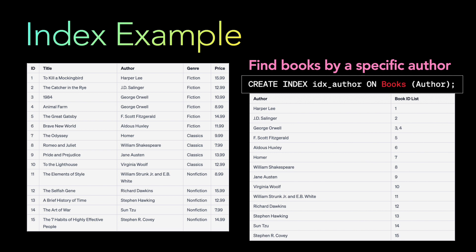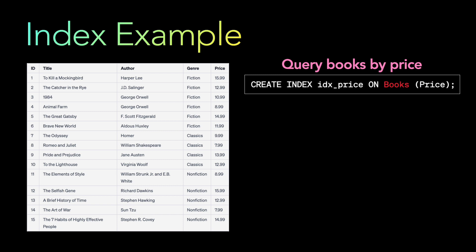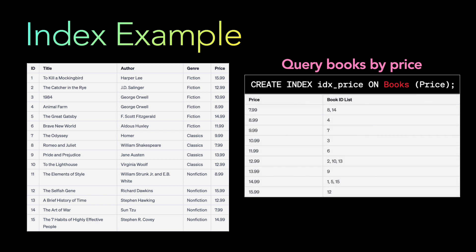Let's take another example with the same table — querying books by price. You create an index: CREATE INDEX price ON books (price). In the background, each unique price value maps to the corresponding book IDs. For example, 7.99 maps to 'Romeo and Juliet' and 'The Art of War'; 12.99 maps to book IDs 2, 10, and 13. Querying for price 14.99 directly returns IDs 1, 5, and 15.